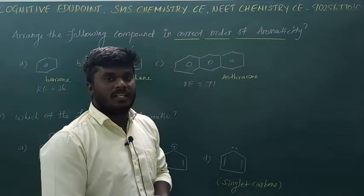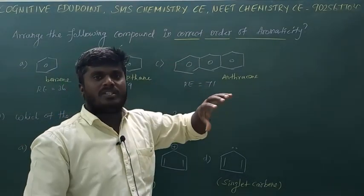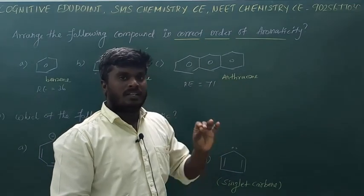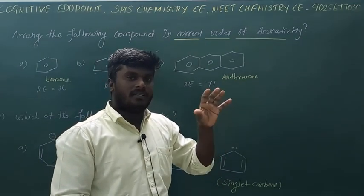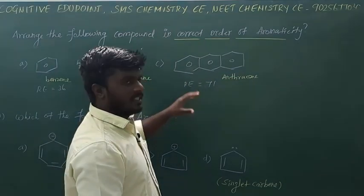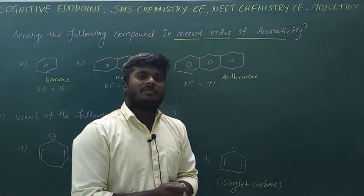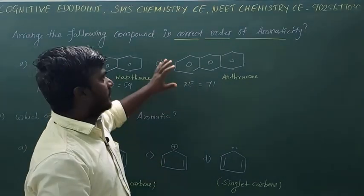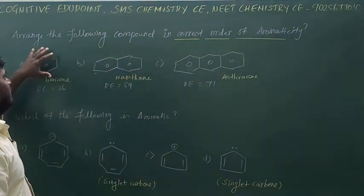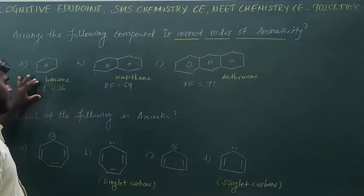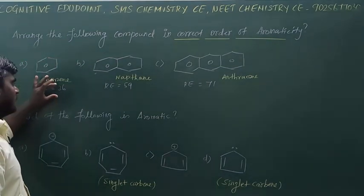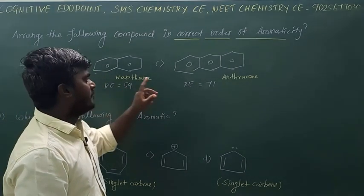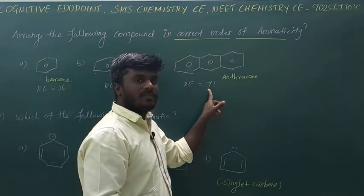In the previous questions, we are comparing aromaticity. Anthracene is less aromatic. The resonance energy for benzene is 36. The resonance energy for naphthalene is 49. The resonance energy for anthracene is 71.